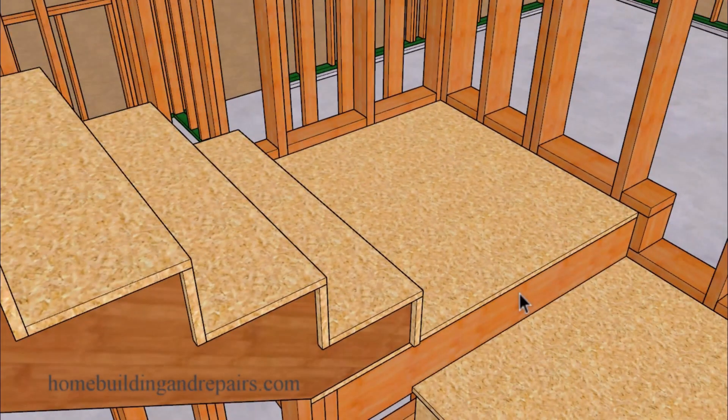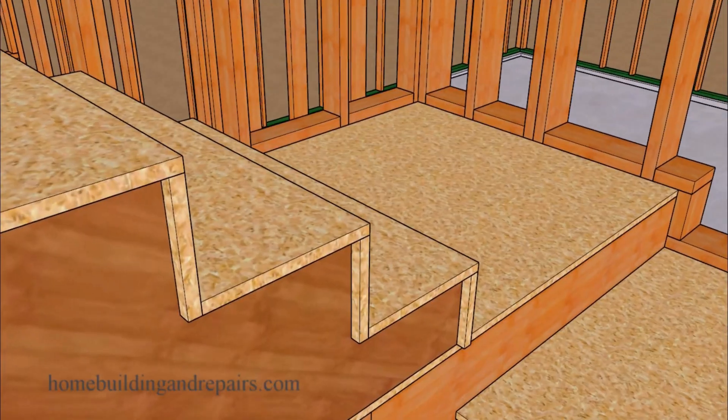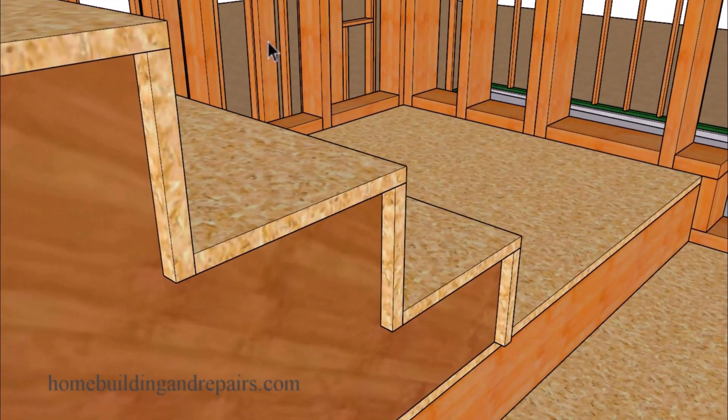Since we have a step up in the landing our fire blocks will also need to be raised a little higher. If you notice over here I have the treads and risers extending about a half inch past the outside of the stringer. This is something you don't need to do all the time, but I like to do it to protect the drywall.